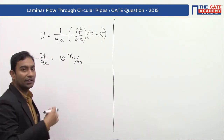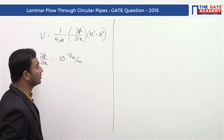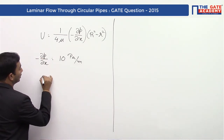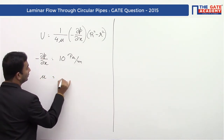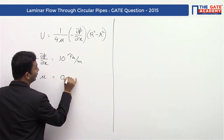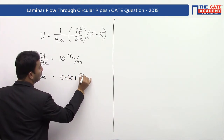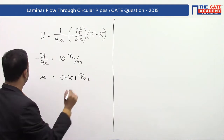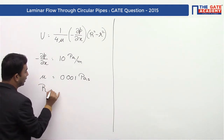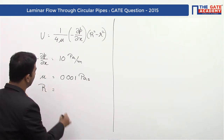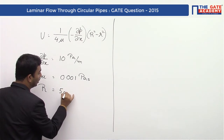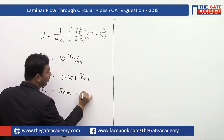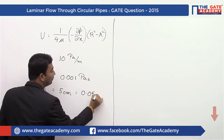It is given as minus in the question. The minus has been shifted to this side, that is why it has become positive here. Viscosity mu is given to us as 0.001 Pascal per second. The radius of the pipe is given as 5 centimeter. I will convert this into meters, so we will have 0.05 meter.